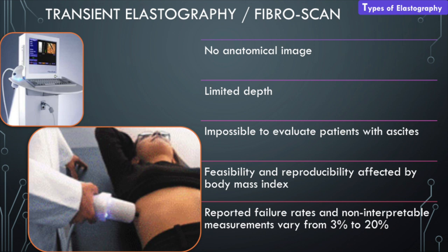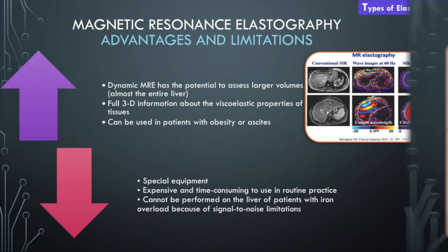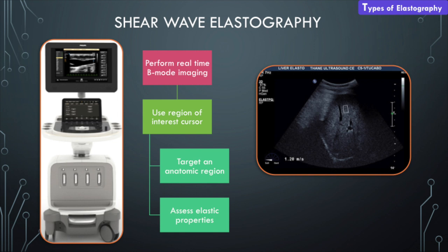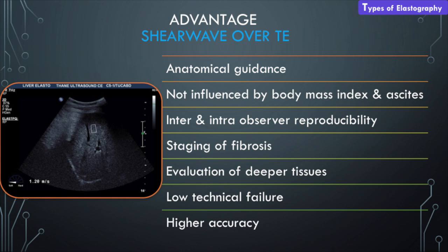Fibroscan has a fair share of problems — its basic limitation is there is no anatomical reference image of where exactly we are scanning, which can lead to many problems. MRI elastography is good and can give assessment of almost the entire liver with a wealth of measurements, but it's quite expensive, time-consuming, and requires specialized equipment. Ultrasound elastography uses our routine machines and probes — you do need a software upgrade, but it's nowhere as expensive as MRI. The advantages of ultrasound shear wave include an anatomical reference so you know exactly where you're measuring, it's not significantly influenced by body mass index or ascites, there is good reproducibility, and as a result we get very good accuracy.